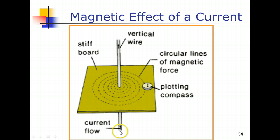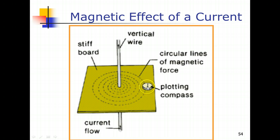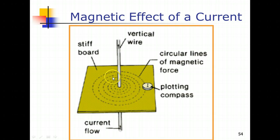For this particular example, take note: this is a normal electrical wire with current flowing from the bottom towards the top. By placing the plotting compasses around it at different positions and taking note of the direction of the needle, that will eventually reveal to us that the magnetic field lines around a straight conductor, when a current is flowing through it, are actually made up of concentric circles.